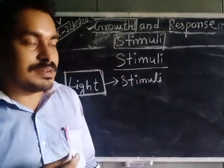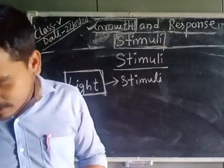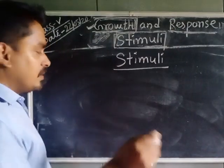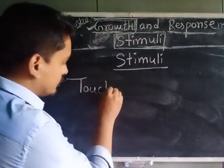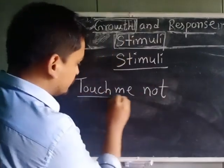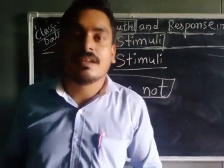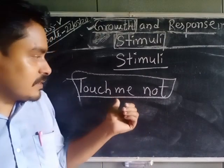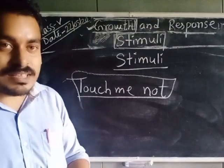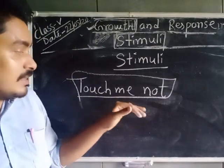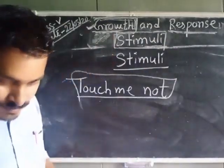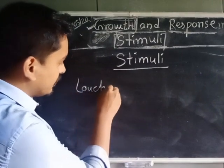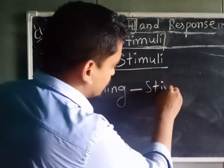Same as human beings or animals, plants also respond. Let me explain how plants respond. Do you know a plant called Tasminaut — in Bengali it is Lajjaboti? If you touch the leaves of the Tasminaut plant, what will happen? It will close. So from this we can say plants also respond like human beings to stimuli. So what is the stimuli here? The stimuli is touch. So here touching is the stimuli.